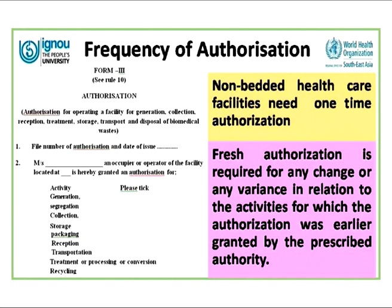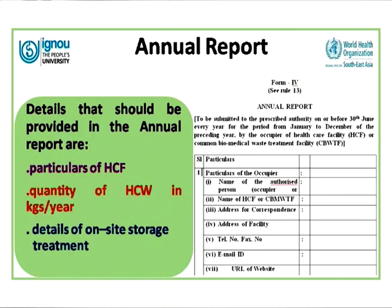For a non-bedded healthcare facility, a one-time authorization is sufficient. A fresh authorization is required if there is any change or variance in the activities for which authorization was previously granted. The second type of record is the annual report, provided in Form 4, available on the website under the biomedical waste management rules.